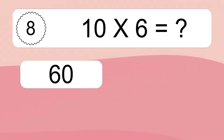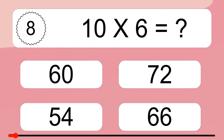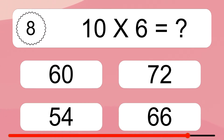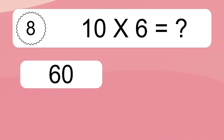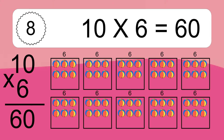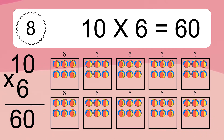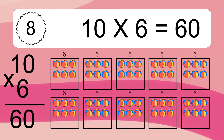10 times 6 equals what? 10 times 6 equals 60. We have 10 boxes, and each box has 6 colorful balls inside. If you count all the balls in all the boxes together, you will have 10 times 6 balls. This equals 60 balls.